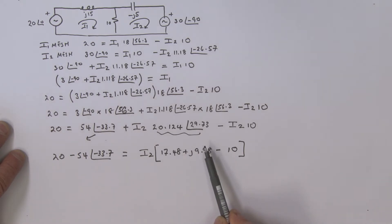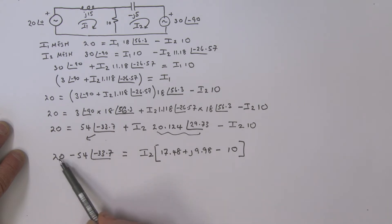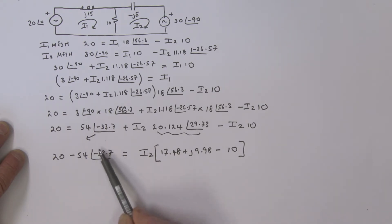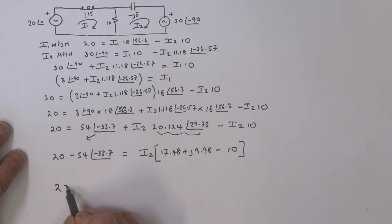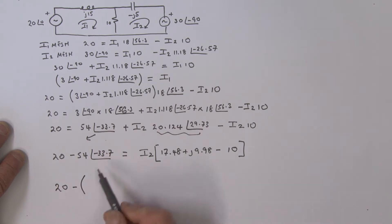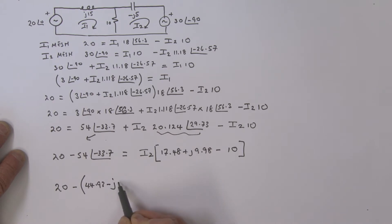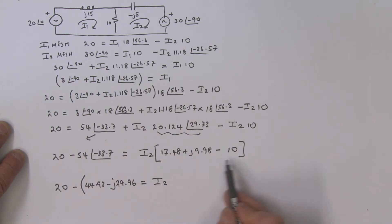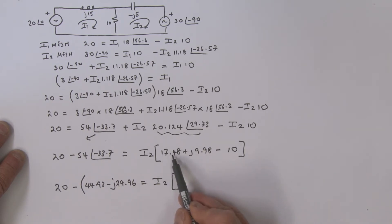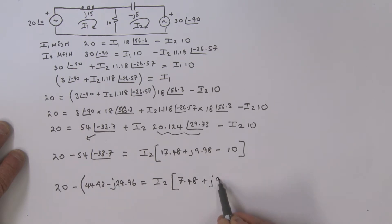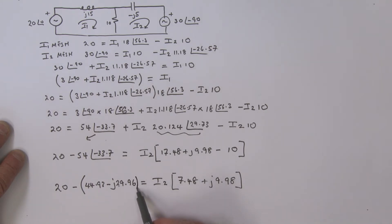Going further, I also need to convert 54 at angle minus 33.7 to rectangular form for the subtraction on the left side. Converting gives 44.93 minus j29.96. So we have 20 minus (44.93 minus j29.96) equal to i2 times (17.48 minus 10 plus j9.98). Collecting the real terms: 17.48 minus 10 gives 7.48, and we still have plus j9.98. We're getting very close to i2.